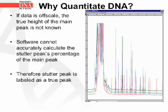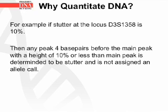If data is off-scale, the true height of the main peak is not known. Therefore, the software cannot accurately calculate the stutter peak's percentage of the main peak, and in situations like this, the stutter peak may be labeled as a true peak. For example, if the stutter at the locus D3S1358 is 10%, then any peak four base pairs before the main peak with a height of 10% or less than the main peak is determined to be stutter, and therefore is not assigned an allele call.